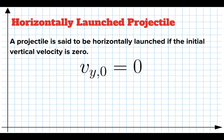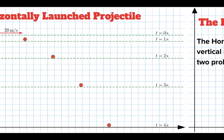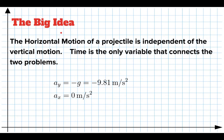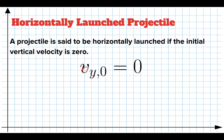We're going to start with a special case: horizontally launched projectiles. If something is horizontally launched, that means you throw it sideways, which means at the beginning of the problem it's not moving up or down. If we launch it at an angle, that's not horizontal. If we throw it downwards, that's not horizontal. But if we launch it sideways, it's a horizontally launched projectile. In that case, the initial velocity in the Y direction is zero — meaning it's not moving up or down at the beginning of the problem.